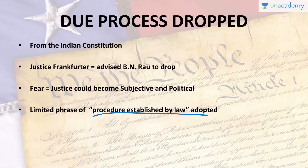The members of the Constituent Assembly feared that adoption of the American doctrine would lead to a flood of litigation — many cases would be filed after the inauguration of the new constitution, and India was not ready for that. Therefore, the Constituent Assembly deleted the phrase 'due process of law' from the draft text and substituted it with 'procedure established by law' in Article 21.